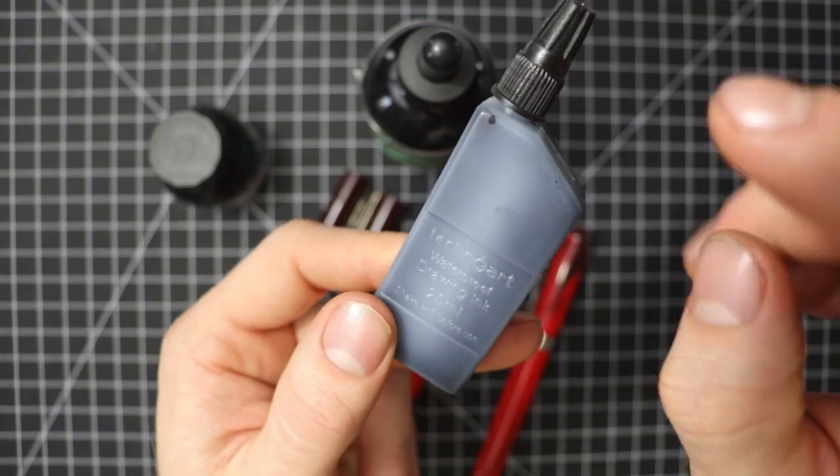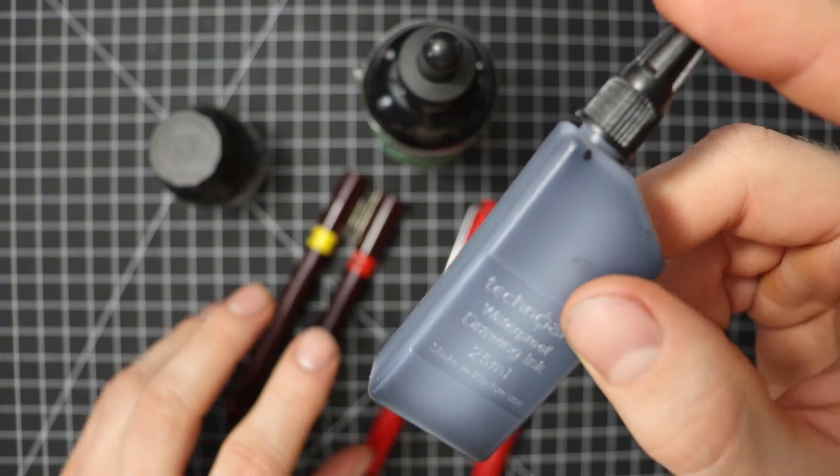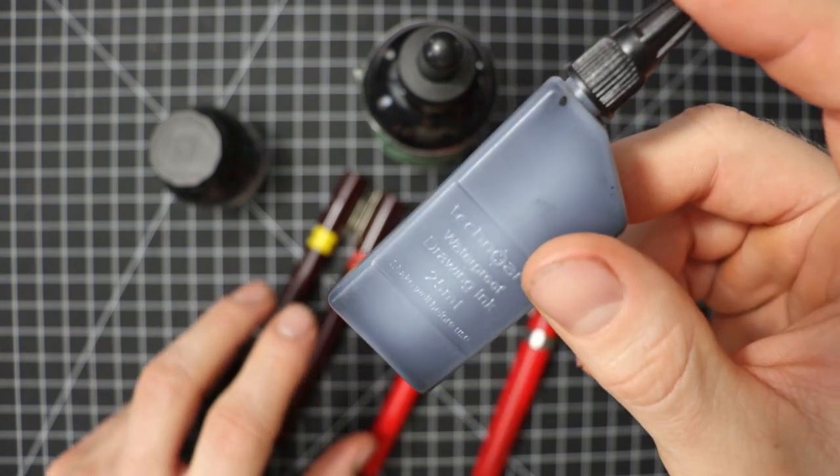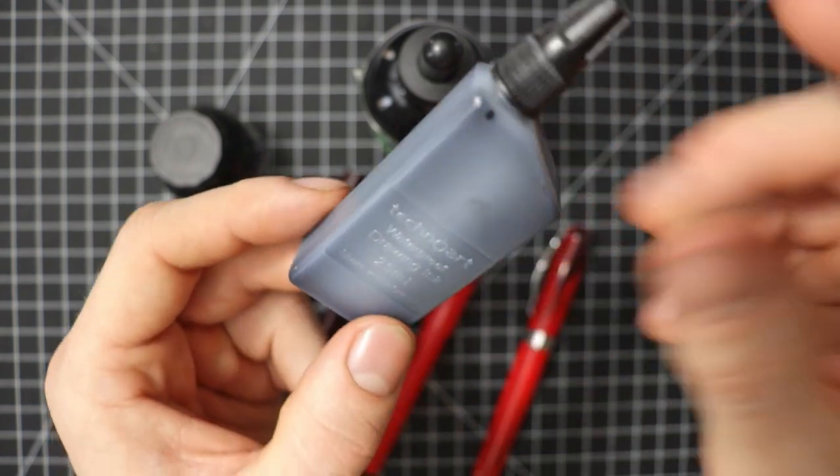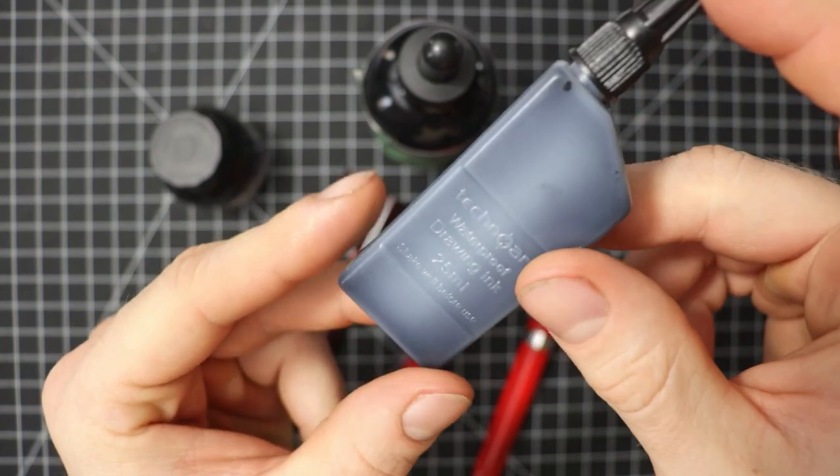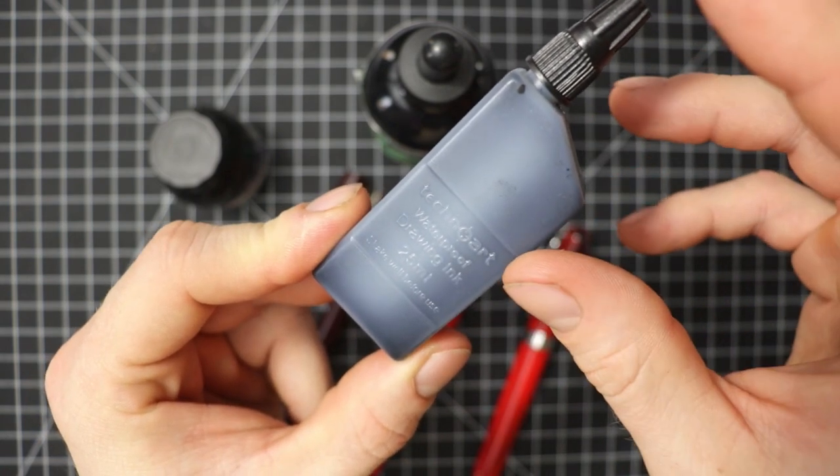This ink is waterproof and it's a drawing ink for the Isograph pen specifically. If you try to use this ink in your fountain pen, what's gonna happen is you're gonna have a hard time cleaning it out because with the fountain pens there is a different cleaning solution.